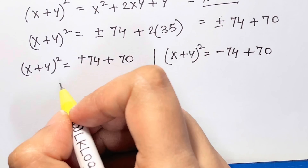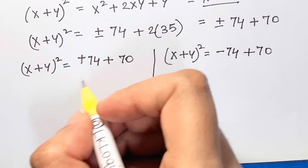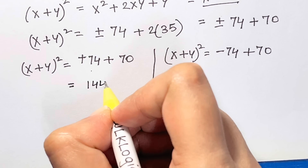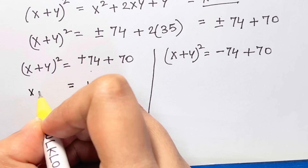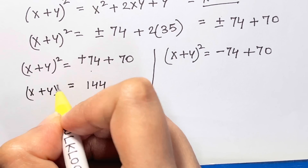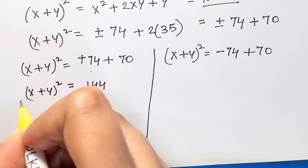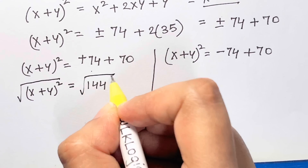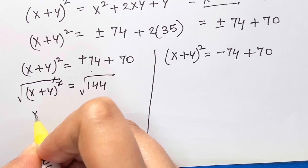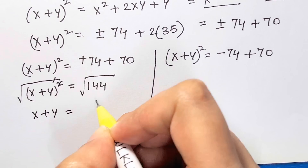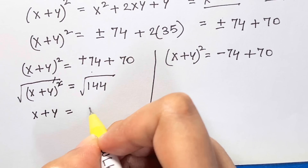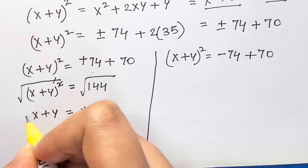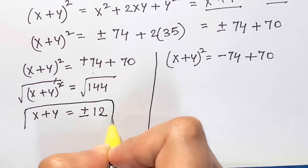For the first case, (x+y)² = 144. Taking the square root on both sides, x + y = ±12. So we have two real values: +12 and -12.